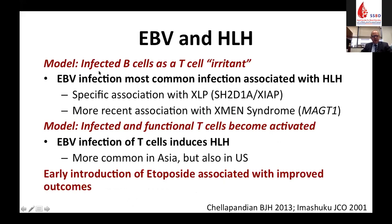Why does EBV associate with HLH? The most common model is that EBV-infected cells serve as a T-cell irritant. In most people, T-cells prune that infection. In patients with poor T-cell function, T-cells are constantly being stimulated and B-cells overgrow like an untrimmed hedge. This is really what causes HLH in the setting of XLP, X-men syndrome, and other T-cell defects. Alternatively, infected T-cells — more commonly seen in Asia — can cause chronic active EBV. Early introduction of etoposide has been associated with improved outcomes in both settings.